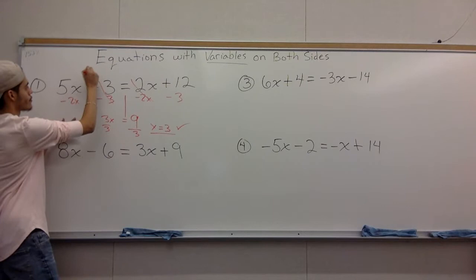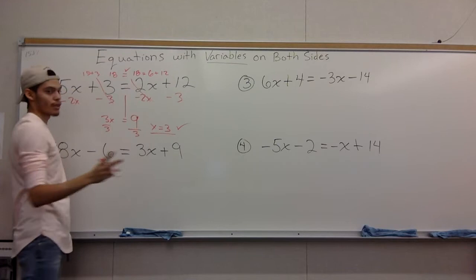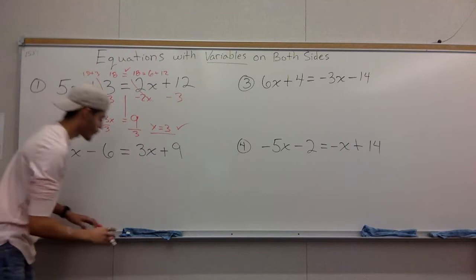If you want to check it, you can plug it back into the very beginning. You have 5 times 3, which is 15, 15 plus 3 is 18. You have 3 times 2, which is 6, 6 plus 12 is 18, and you see that both sides are equal. You can do that for any other problem to see if you're correct.